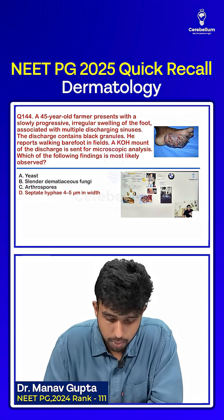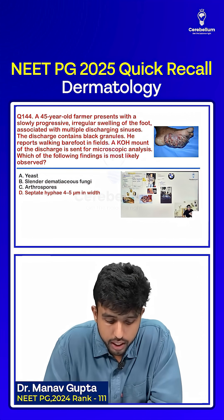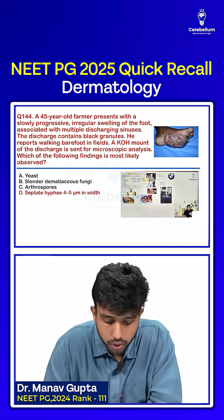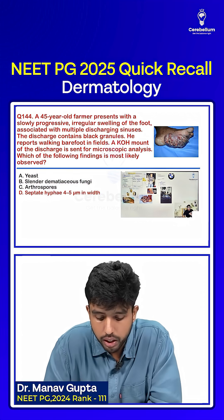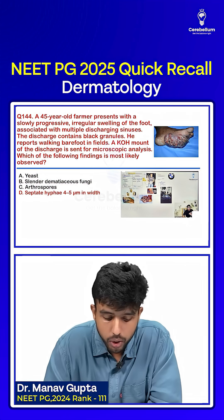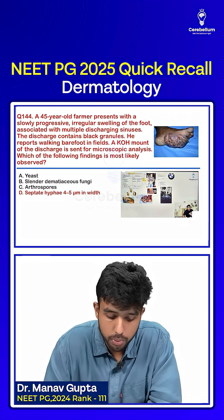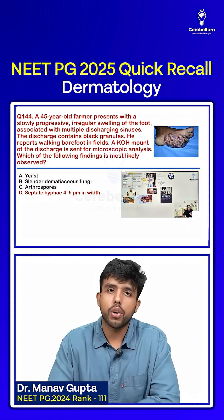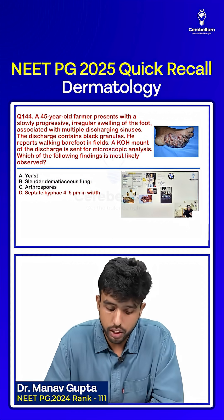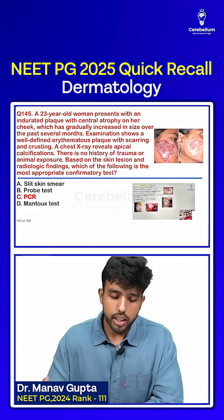A 45-year-old farmer presents with slowly progressive irregular swelling of the foot associated with multiple discharging sinuses. The discharge contains black granules. He reports walking barefoot in the fields. A KOH mount of the discharge is sent for microscopic analysis. The correct answer: septate hyphae of 4 to 5 micrometers in breadth were noted.